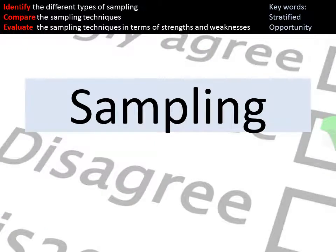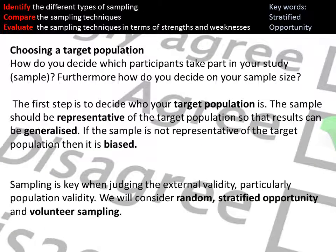Moving on to sampling techniques: a sample refers to the participants used in your study and how you recruit them. The first step is choosing a target population — the people you want to generalize your results to. Your sample needs to be a fair, representative selection of that target population. For example, if your target population is teenagers, your sample should consist of teenagers and not young adults or anyone outside that age range.